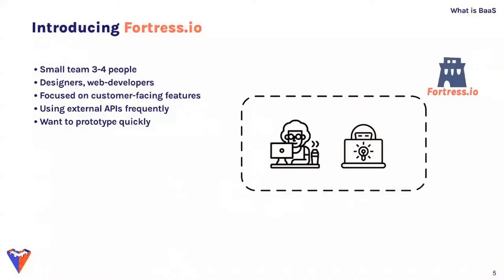As an example, consider Fortress IO, a small company with a handful of engineers developing a new application focused on customer-facing features. They need a relatively simple backend that keeps track of user data and files and handles user authentication. Their application also uses external APIs, so they need a way to integrate with those, and like many new companies, they want to prototype quickly and get their product to market as fast as possible.